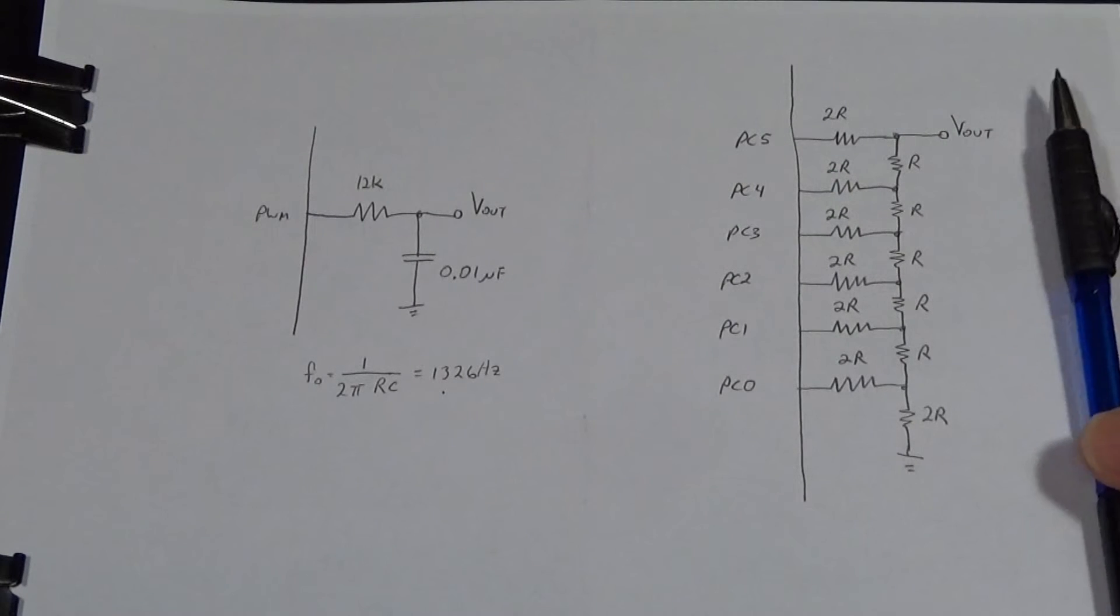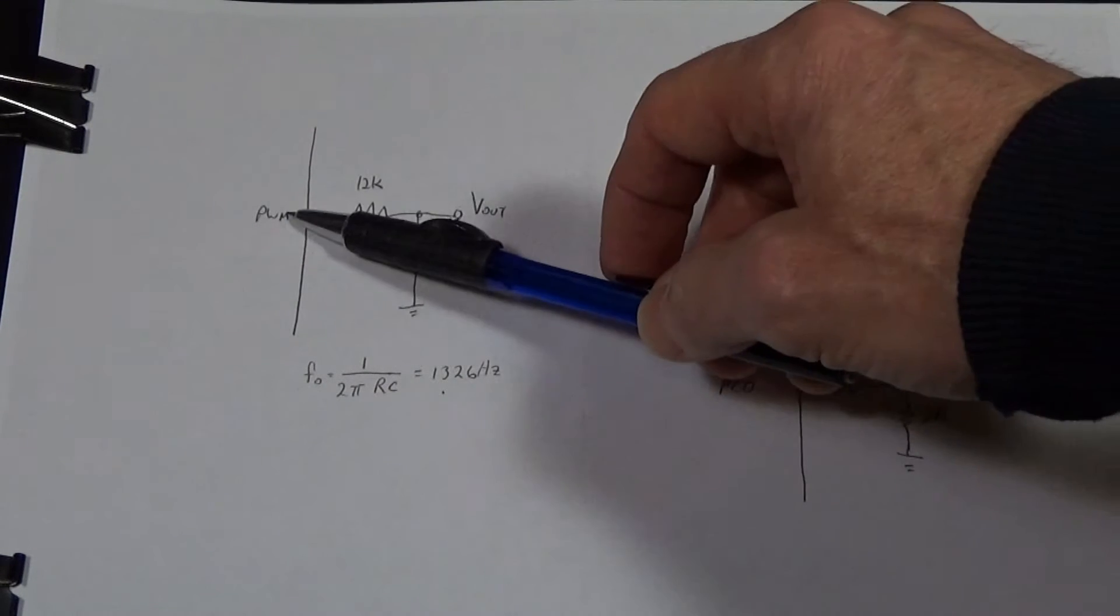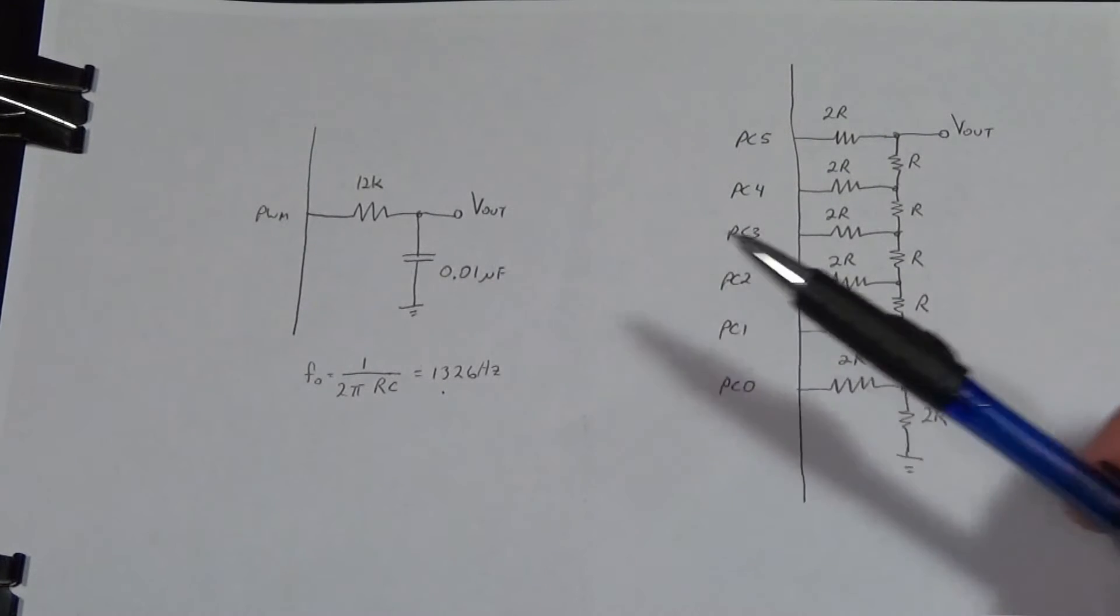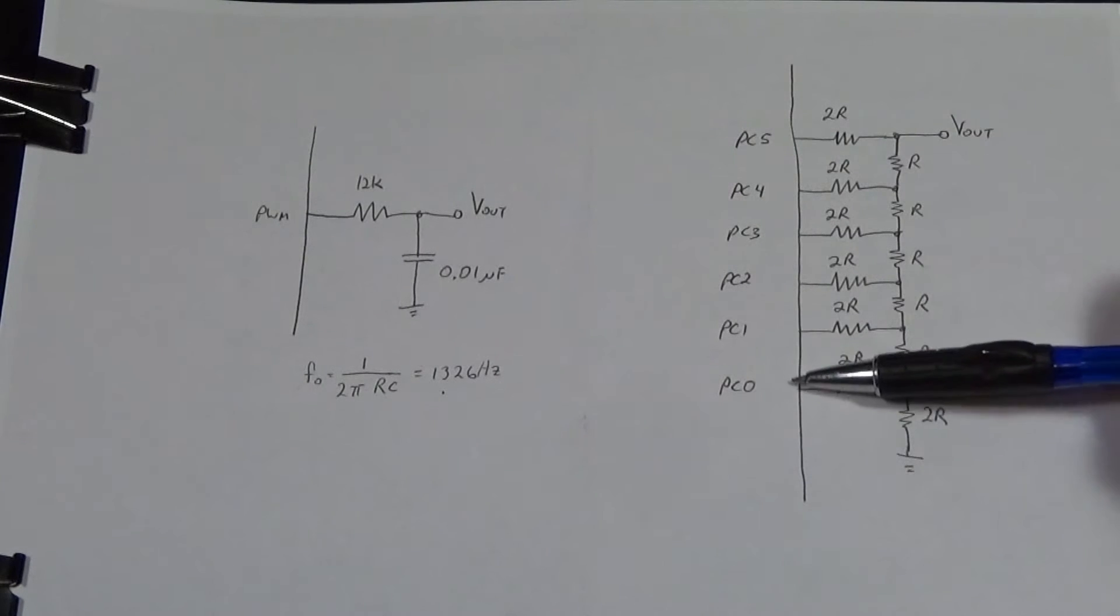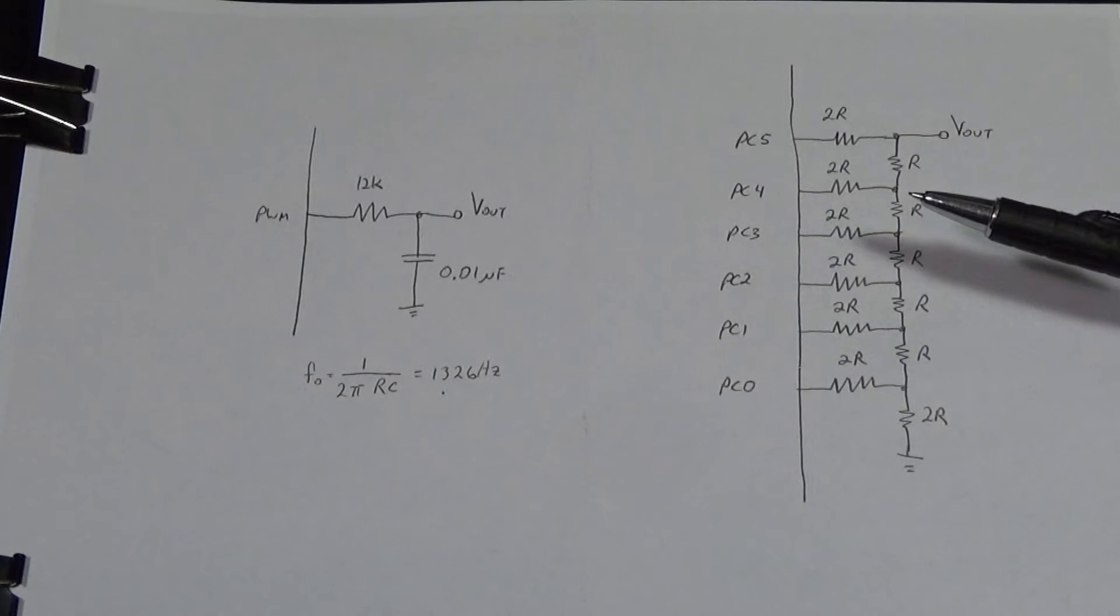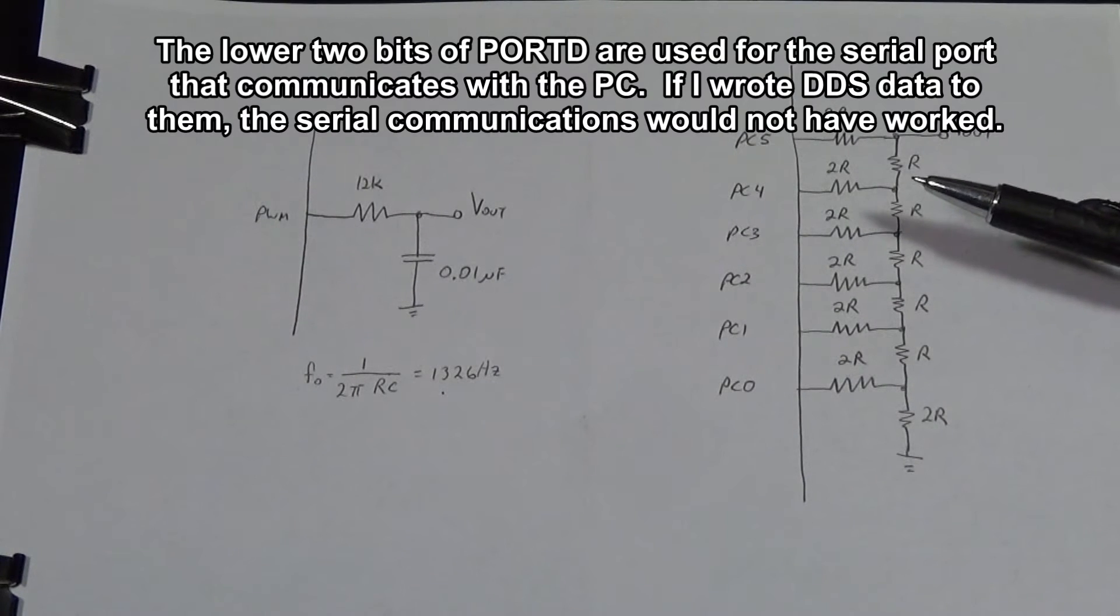Now the data that's in the sine table that gets output to the PWM is eight bits of data and I would have preferred to use an eight bit ladder here but the ATmega has only one I.O. port that's a full eight bits wide port D. Ports C and B are only six bits wide but I couldn't use port B or port D which is eight bits wide because the lower two bits are assigned to the serial port and I couldn't use those as two more signals coming out into the ladder network here.